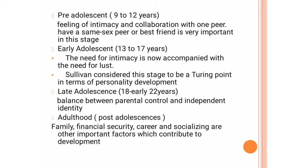Later adolescence spans eighteen to twenty-two years and involves a balance between parental control and independent identity. Last is adulthood, or post-adolescence, where family, financial security, career, and socializing are important contributing factors to development. Sullivan's developmental approach — with various stages and their successful completion — results in the development of human personality. The important and distinctive factor of Sullivan's theory is the interpersonal aspect.